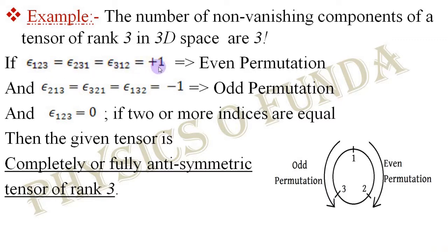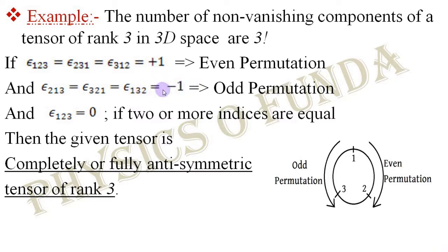If we get the value of all these even-permuted components as +1, as well as the values of those components obtained by odd permutation — such as ε₂₁₃, ε₃₂₁, and ε₁₃₂ — as −1, and if the components where any two or more indices are equal become 0, then only the given tensor is called a completely or fully anti-symmetric tensor of rank 3.